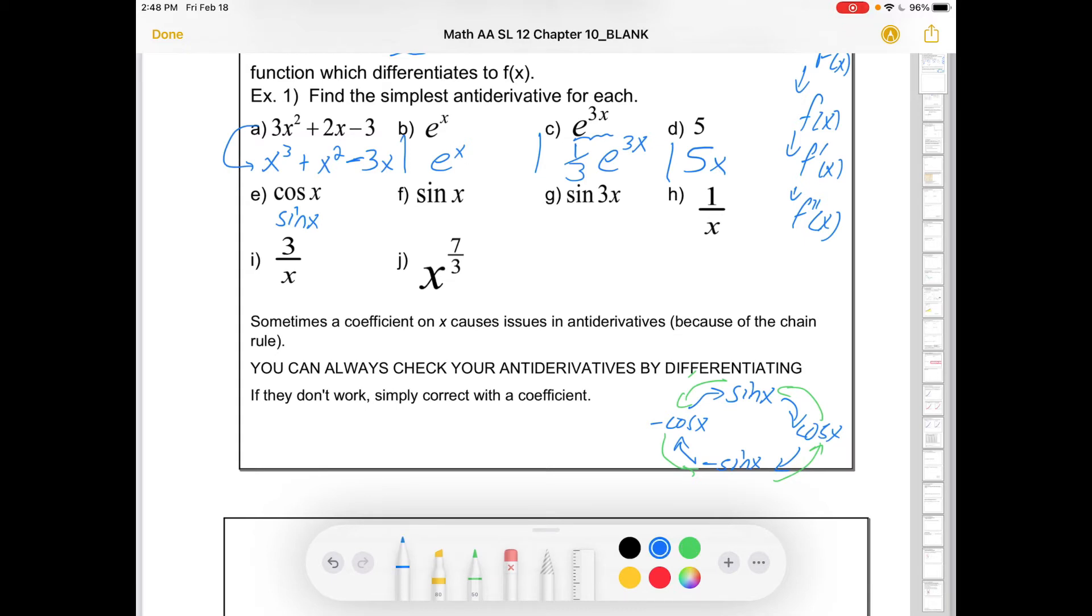Similarly, what would be the anti-derivative of sine x? Well, it would be negative cos x. And I can check that by differentiating negative cos x. It would give me negative that I had to begin with. The derivative of cos x is negative sine x, so I'd end up with positive sine x. So this is all looking okay.